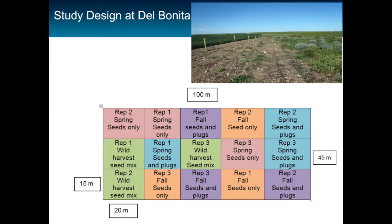What you see right now is just the site — this is all cultivated field, and this is the native that we established in 2011. We have about one hectare, with about three reps. We look at seed, because you have various options for establishing fescue — a seed mix by itself, plugs, seed plus plugs, and native hay.